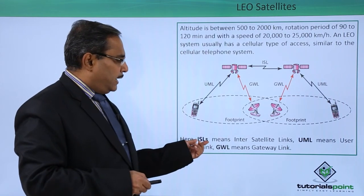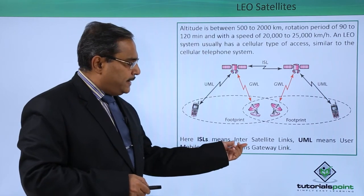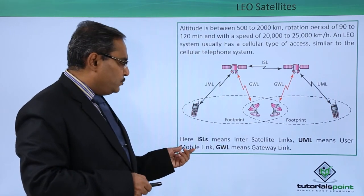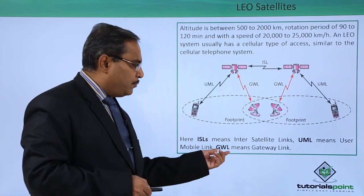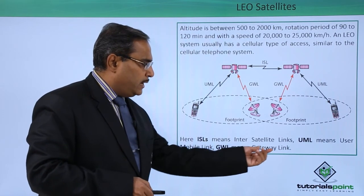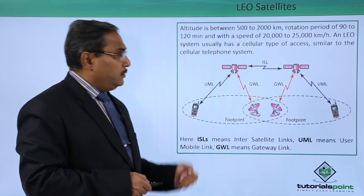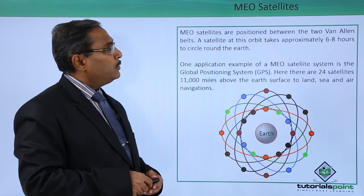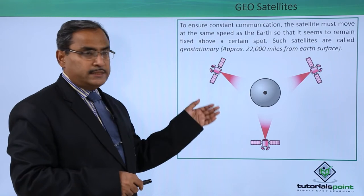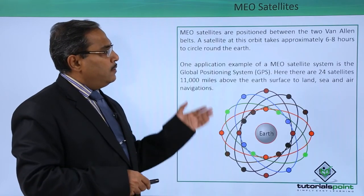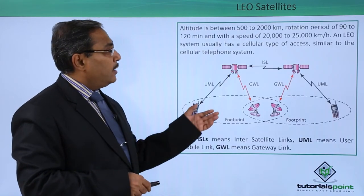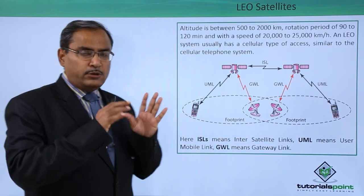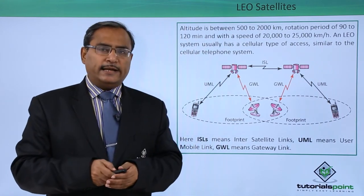ISL means inter-satellite links, EML means the user mobile link, and GWL means the gateway link. In this way we have discussed all three satellite categories: GEO satellites, MEO satellites, and LEO satellites. This is a basic introduction regarding these satellite categories.